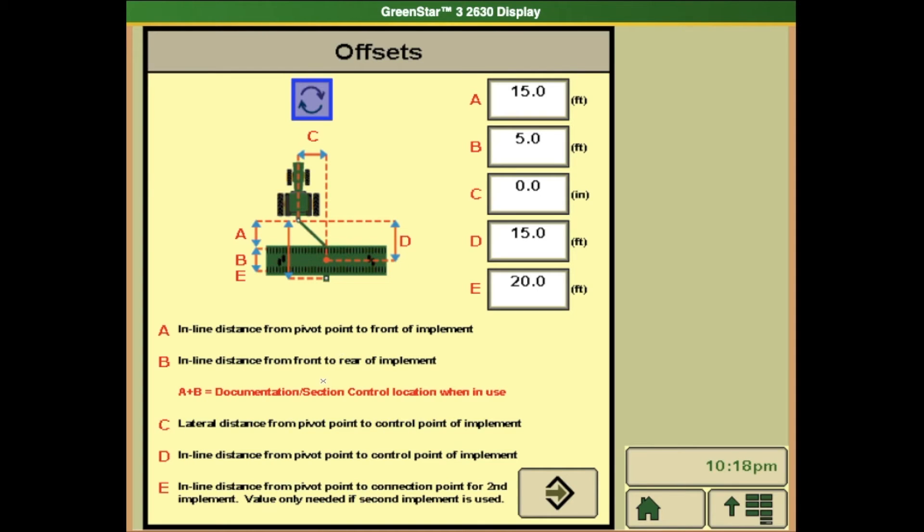Letter D is the inline distance from pivot point to the control point of the implement. Letter E, if you're pulling a second implement behind your planter, is where you would enter that measurement.